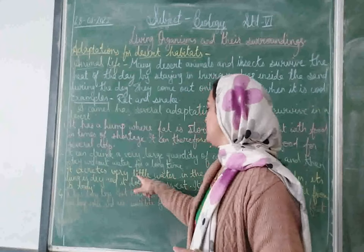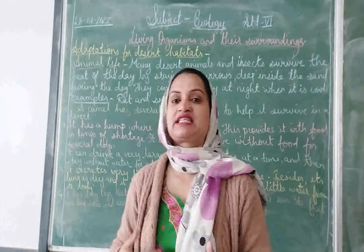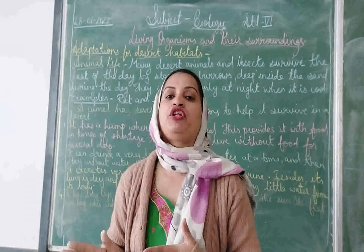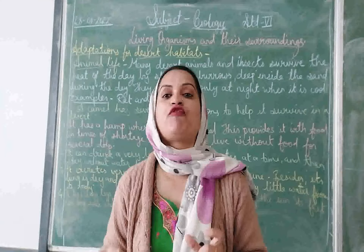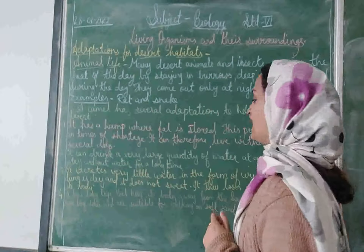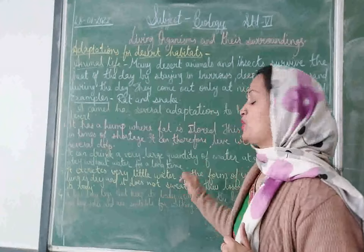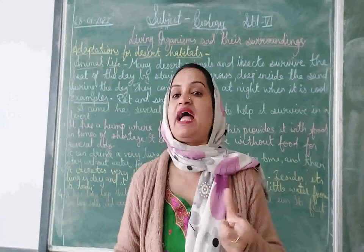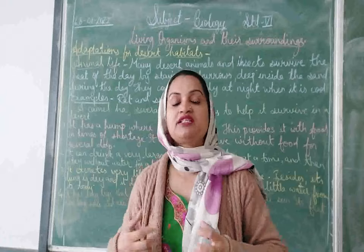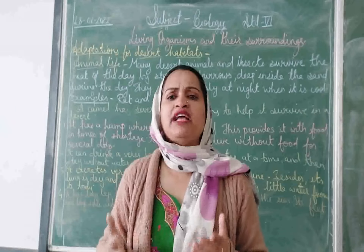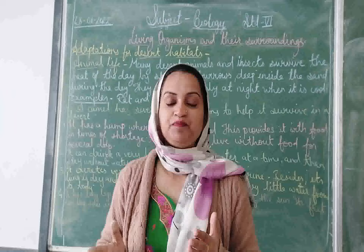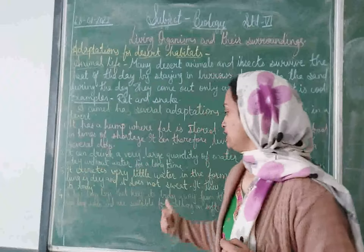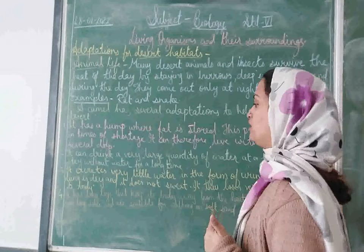The camel excretes very little water in the form of urine. Excretion means to give out waste from the body. It excretes very less water as urine. Besides, its dung is dry and it doesn't sweat. The dung it gives out as waste is also very dry. Other animals sweat, giving out waste in liquid form from their body, but the camel does not sweat. So it loses very little water from its body.